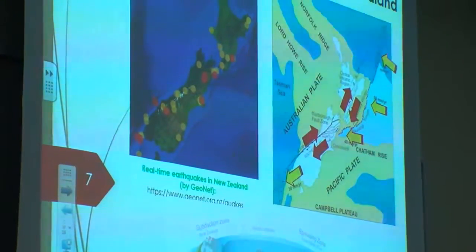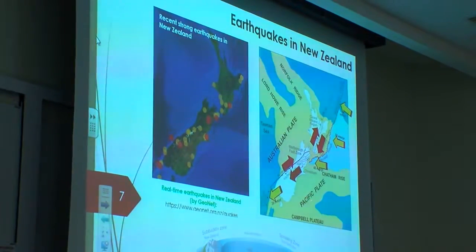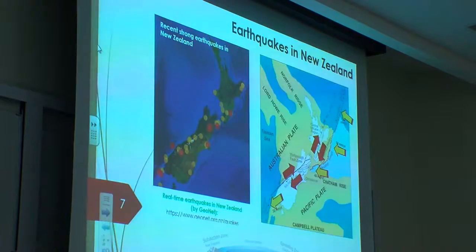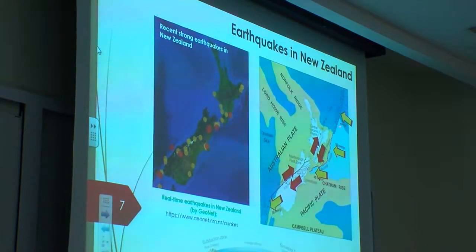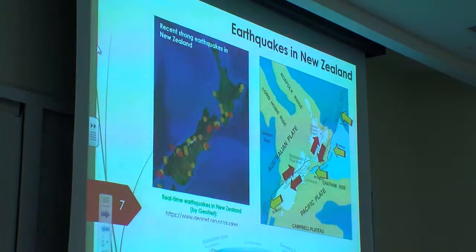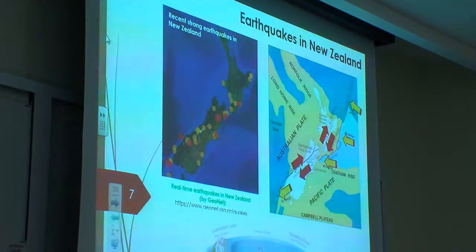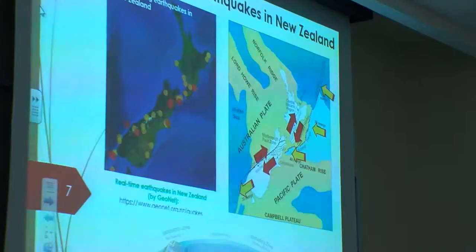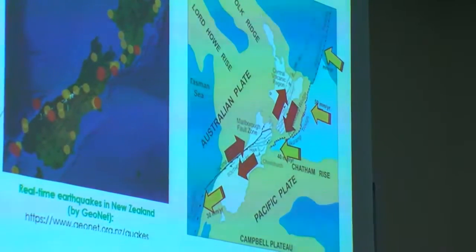Let's look a little closer at what happens in New Zealand. We have the Pacific Plate and the Australian Plate colliding with each other. This plate moves at a rate of 60 mm per year — 6 cm per year — and collides against the Australian Plate. The two plates are also sliding against each other, creating different mechanisms and different types of earthquakes.